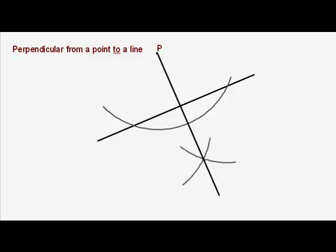Now, when we join up that line, it's at right angles to the other line, and it comes from the point P, which is exactly what we were asked to do. But it's like doing sort of half of a perpendicular bisector.